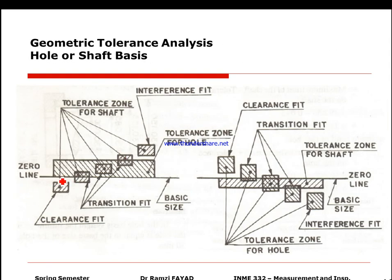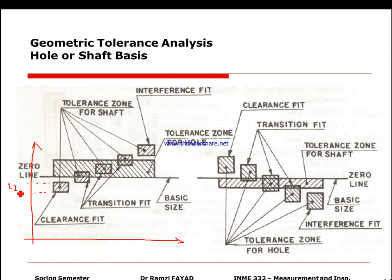Clearance fit is when the shaft is much smaller than the hole — the maximum value of the shaft is much less than the minimum value of the hole. Transition fit sits between the two extremes. Interference fit is when the shaft dimension is much bigger than the hole, so assembly must be done by force. The diagram shows the hole range and shaft range along a common dimension axis.